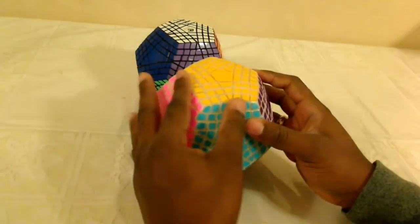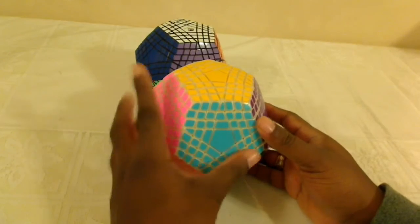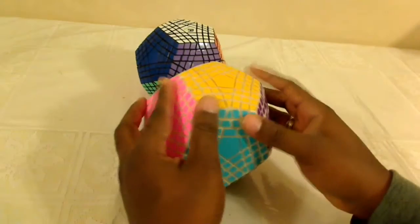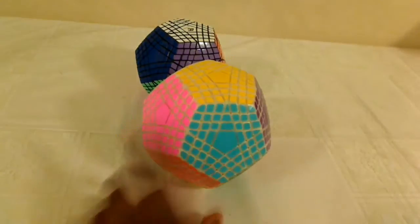Okay. There doesn't seem to be a lot of alignment issues with the MF8 one. There are considerable alignment issues with the Cube4U one though. You have to really watch out to make sure everything is aligned. This one is much, much more forgiving.